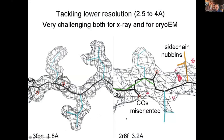This just illustrates the issue: at around two angstroms — this is 1.8 Å — you truly can see the direction and even very cleanly see the carbonyl oxygen, so you really know how to model that peptide. But at three angstroms or worse, you can't see a bump for the carbonyl oxygen at all, and so it gets put in fairly random directions, both by software and by people.